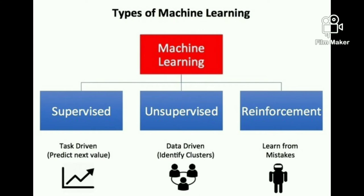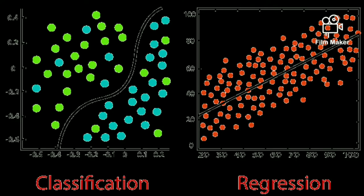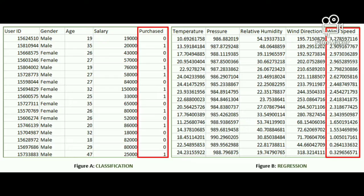There are three types of machine learning: supervised learning, unsupervised learning, and reinforcement learning. Supervised learning is when the model is trained on a labeled dataset. A labeled dataset is one which has both input and output parameters — basically your independent variables and your dependent variable.